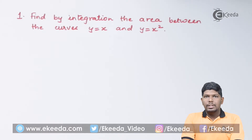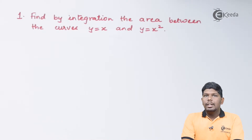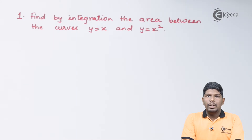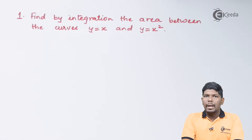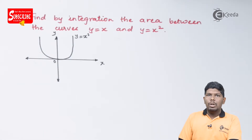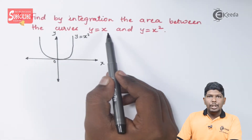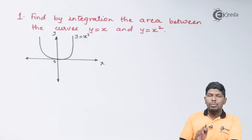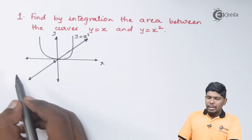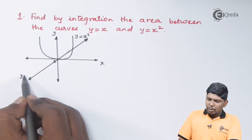So let us draw the graph first. The parabola is given as y = x². The minimum power is with y and y is positive, so we will draw a parabola in the direction of the positive y-axis. This is our parabola y = x². Further, we have to draw a line y = x. This line will pass through the first and third quadrant, passing through the origin. So this is our line y = x.